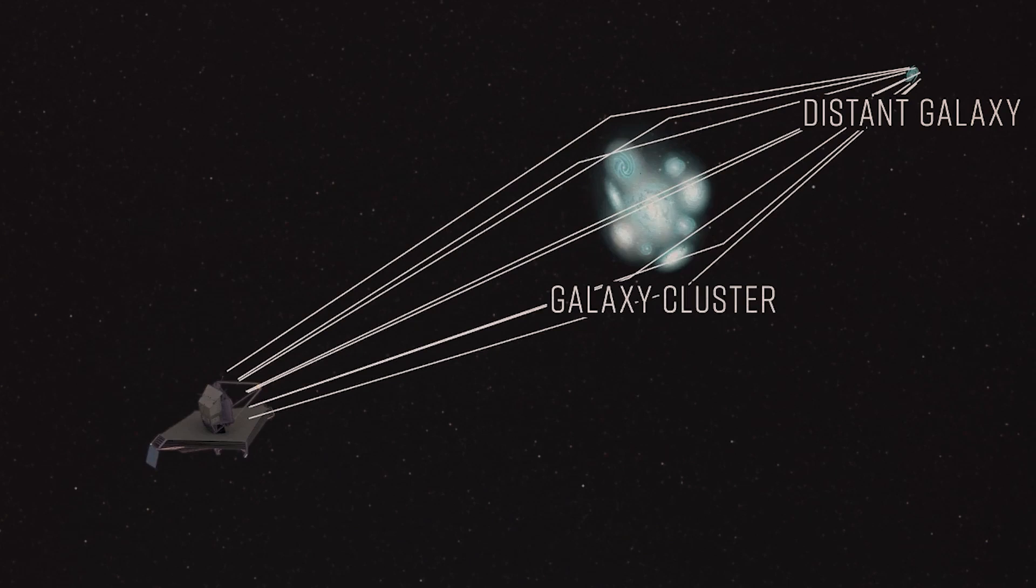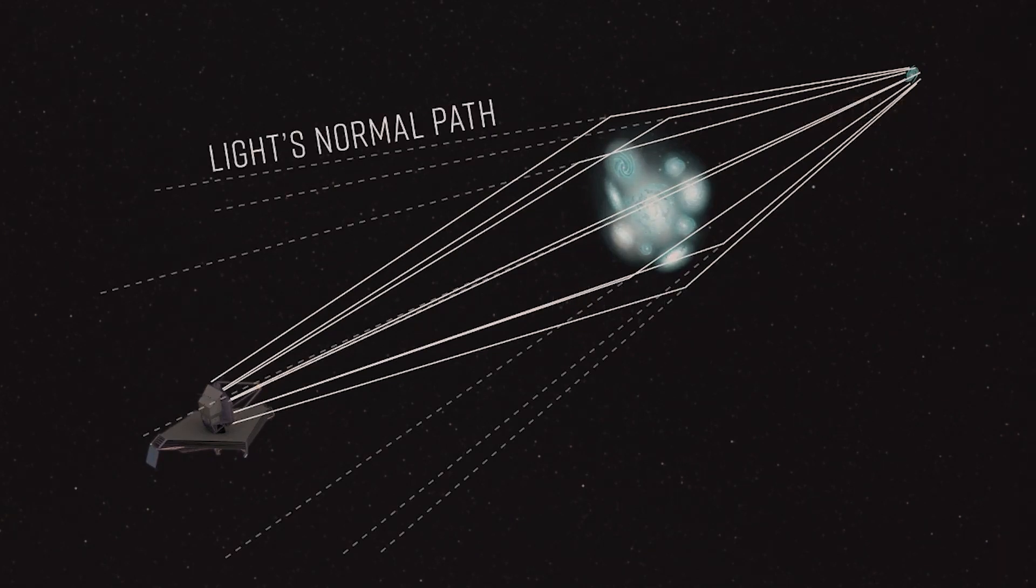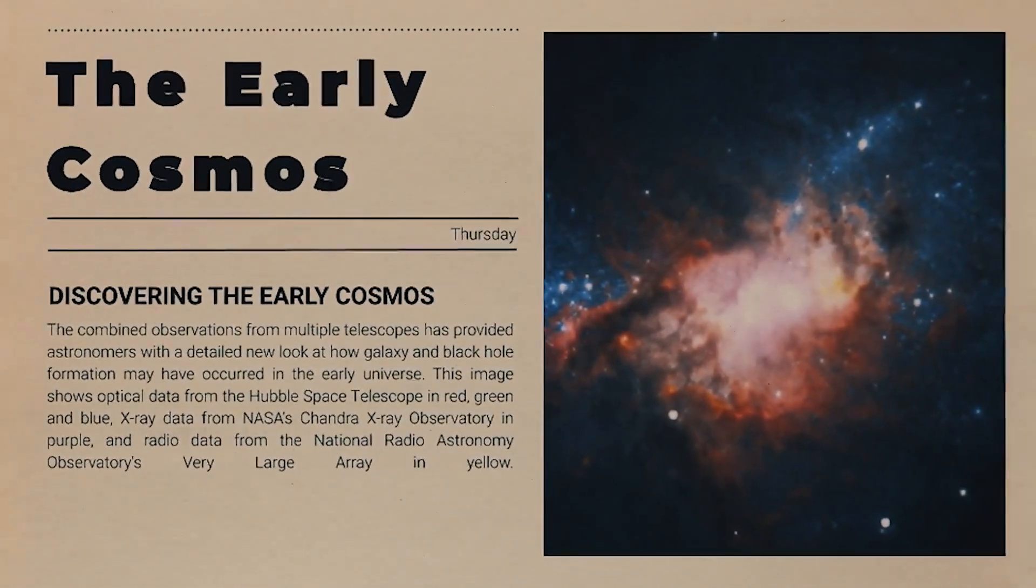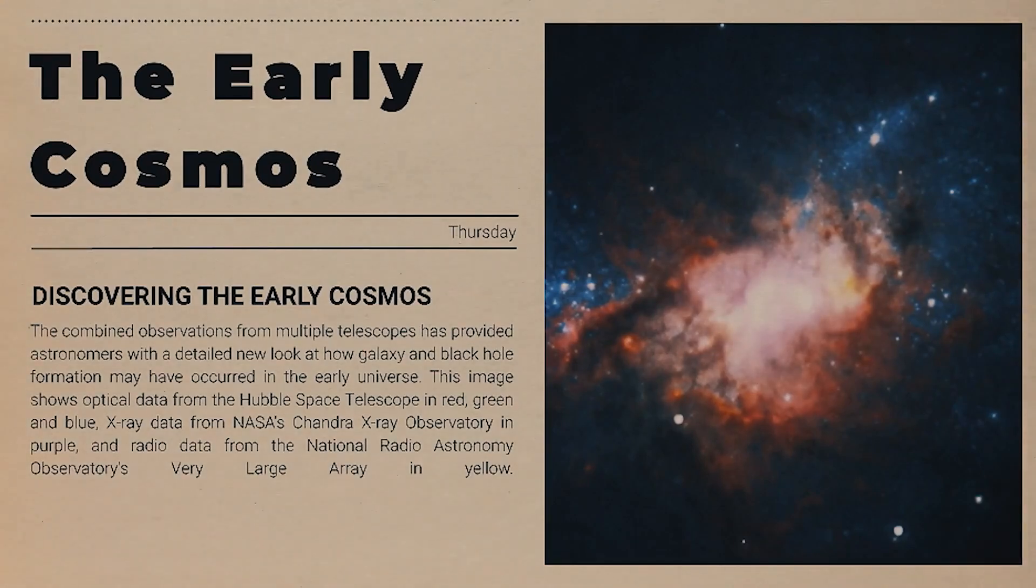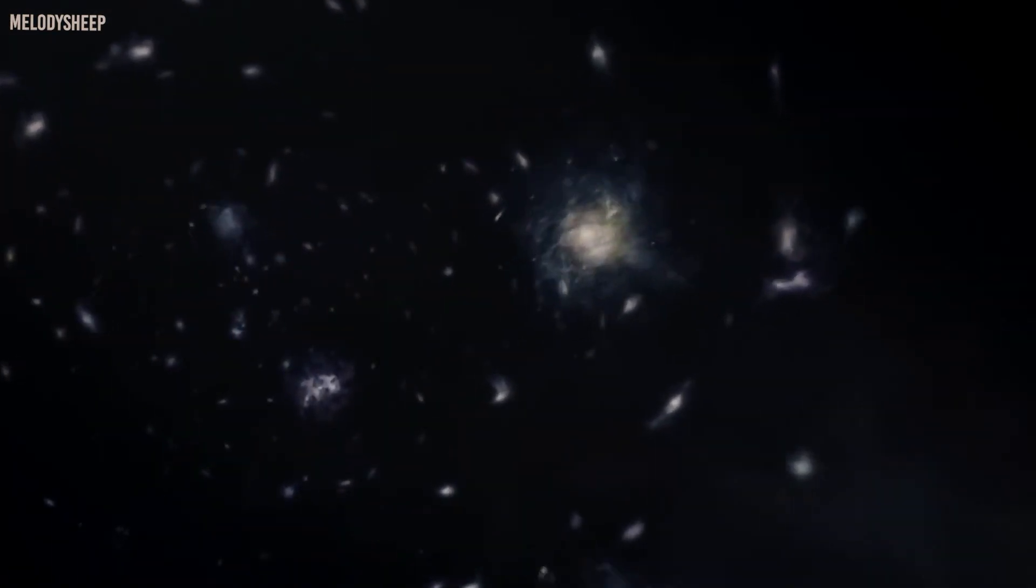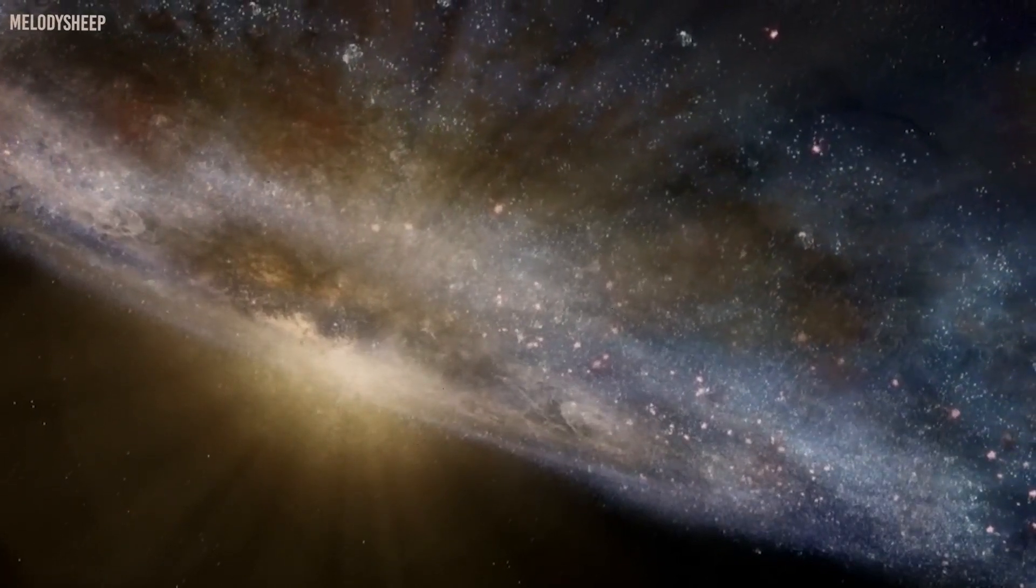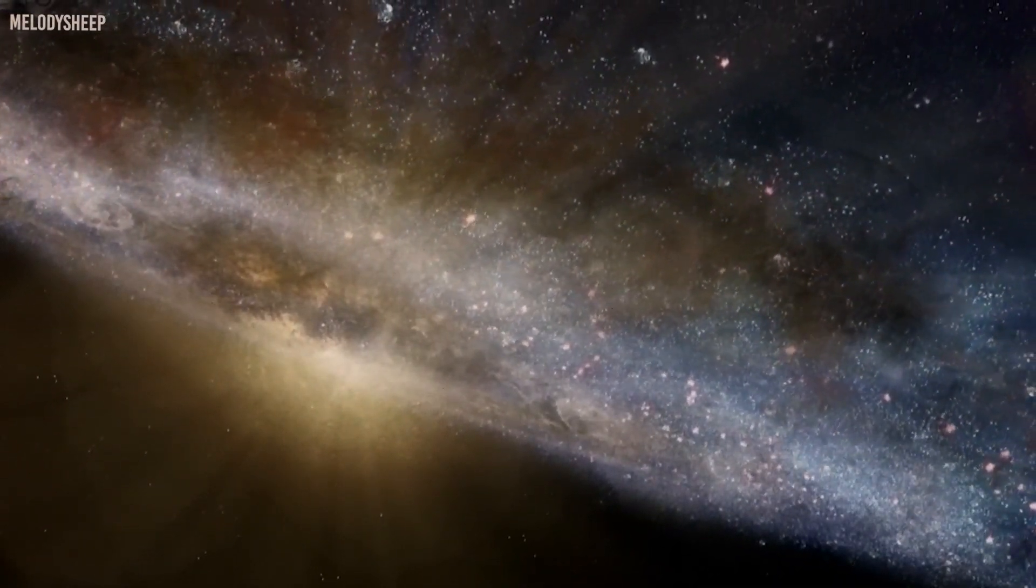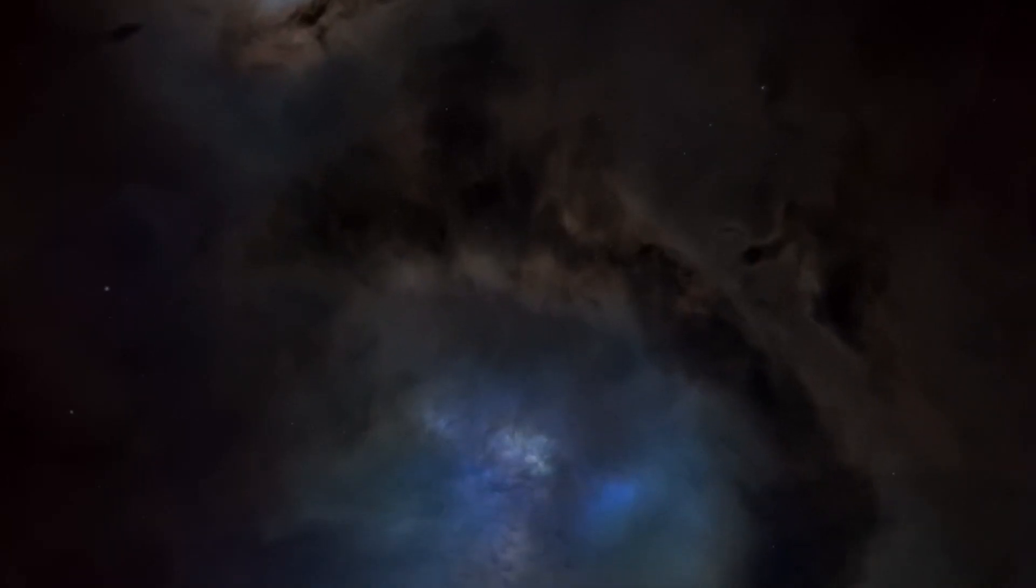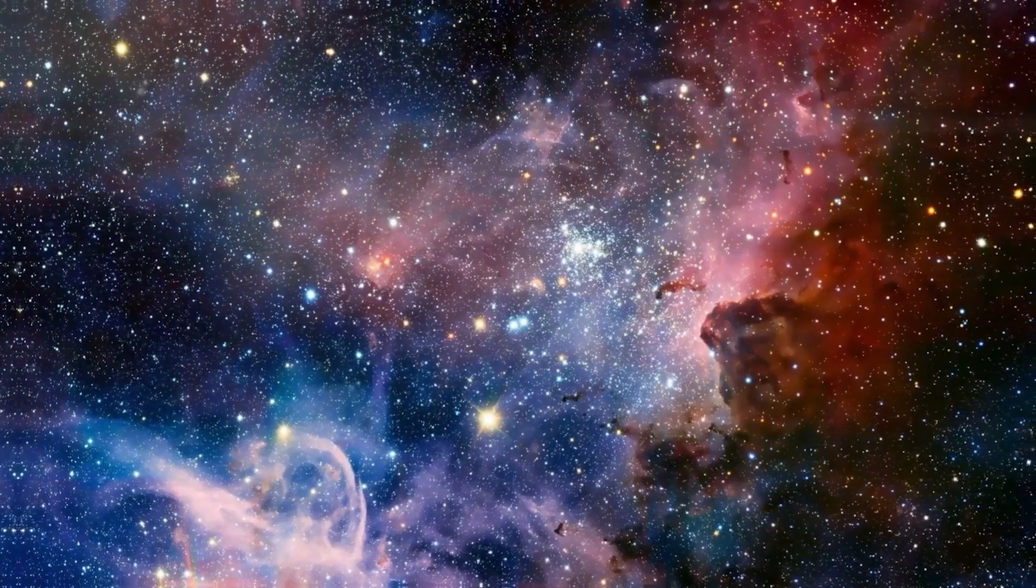However, not all high-redshift candidate galaxies have been so fortunate, emphasizing astronomers' initial caution. Just 240 million years after the Big Bang, Finkelstein's Cosmic Evolution Early Release Science Survey, SEERS, discovered a potential galaxy with a redshift of 16.4. Later spectroscopy has demonstrated that this deduction was incorrect. The galaxy is actually a dusty imposter at a redshift of 4.9, or 1.2 billion years after the Big Bang, which is still spectacular but not quite record-breaking.